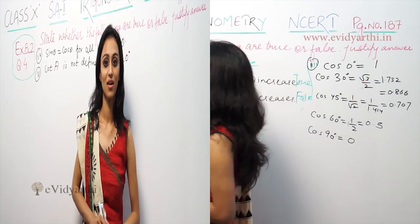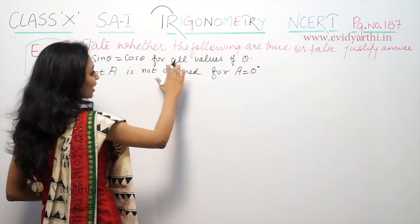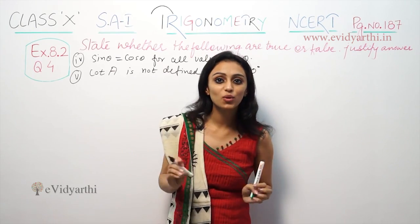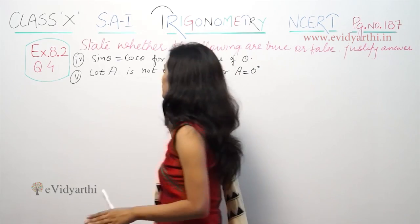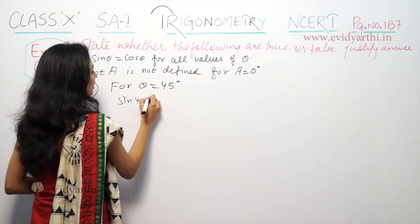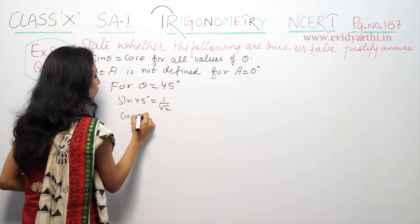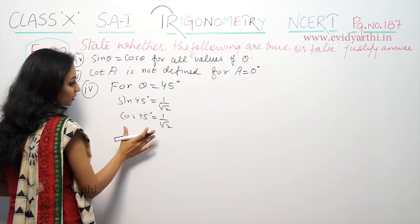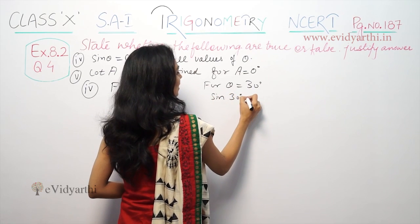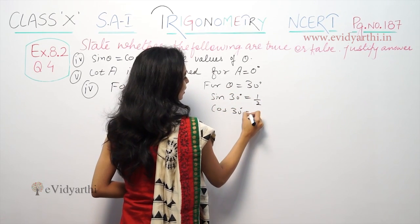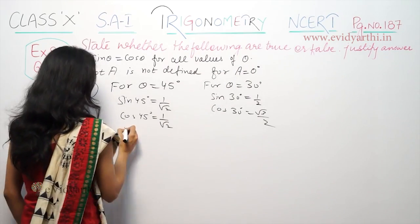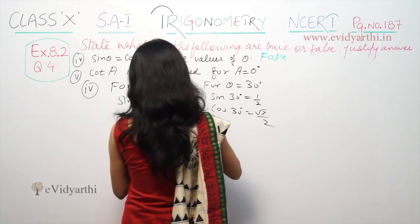Next part: sin θ is equal to cos θ for all values of θ. We will check whether sin θ and cos θ are equal at different angles. For θ = 45°, sin 45° is 1/√2 and cos 45° is also 1/√2 — they are equal here. But for θ = 30°, sin 30° is 1/2 while cos 30° is √3/2 — they are not equal. So sin θ and cos θ are not equal for all values of θ. Therefore this statement is false.